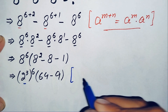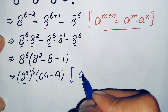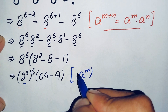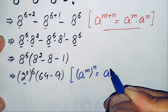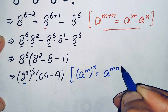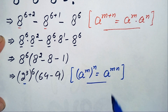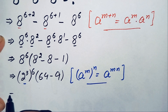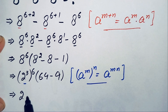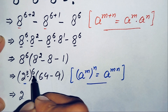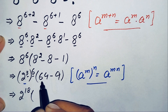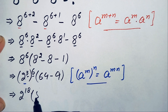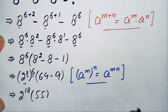Now we use the exponential identity: a raised to power m, whole raised to power n, equals a raised to power m times n. Using this identity, the first number becomes 2 raised to power 3 times 6, which is 2 raised to power 18, times 55.